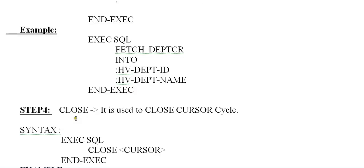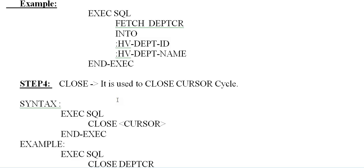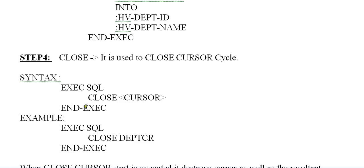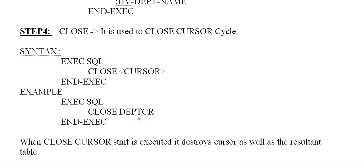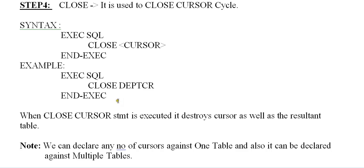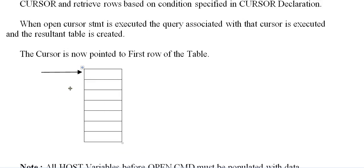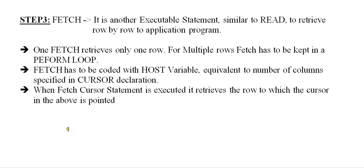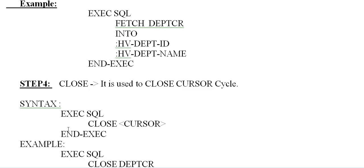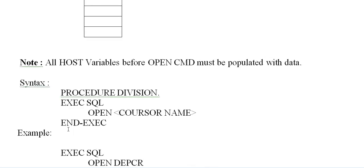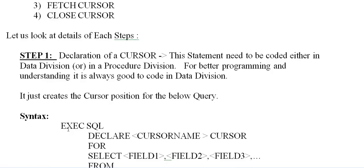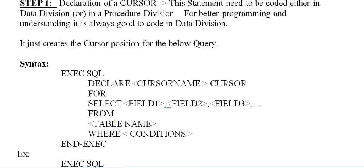Step 4 is to close a Cursor. It is used to close the cursor cycle. The syntax is: EXEC SQL CLOSE cursor-name END-EXEC. When the CLOSE CURSOR statement is executed, it destroys the cursor as well as the resultant table that was created during the OPEN. These are the four steps in the life cycle of a Cursor: declare a cursor, open a cursor, fetch a cursor, and close a cursor.